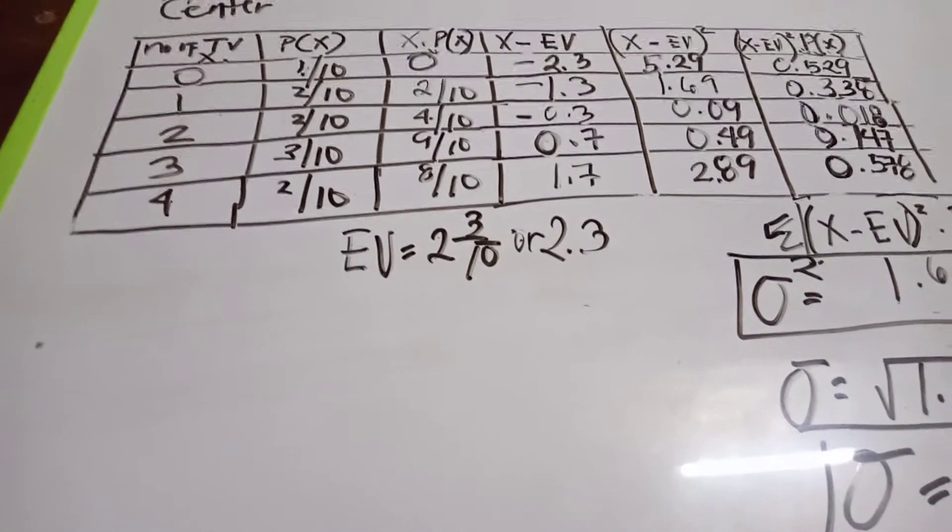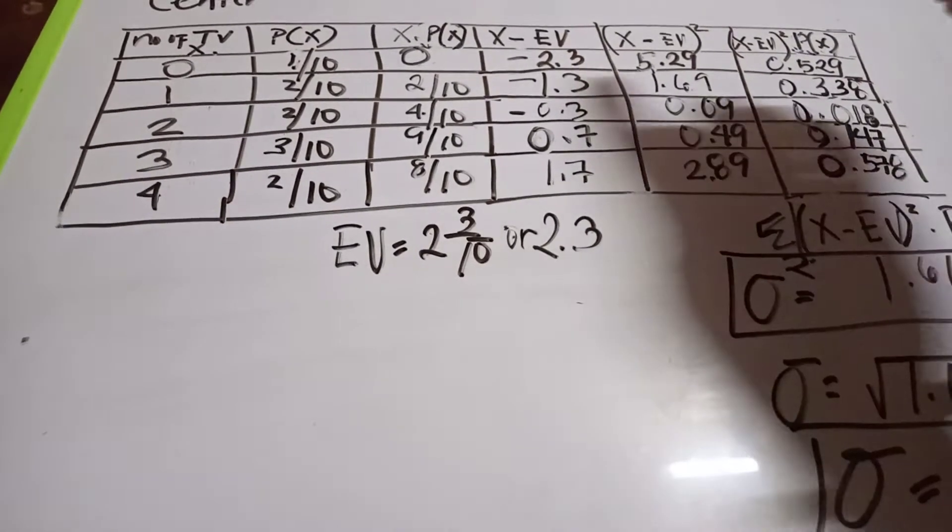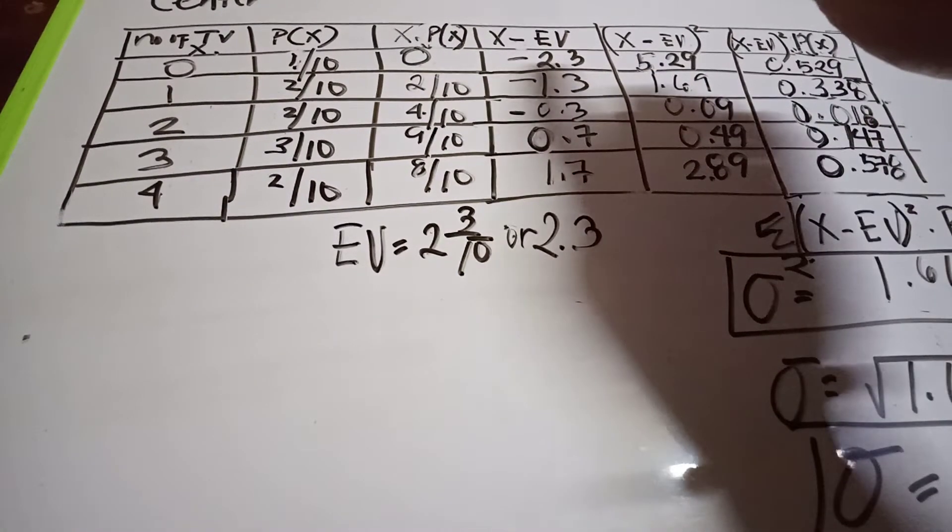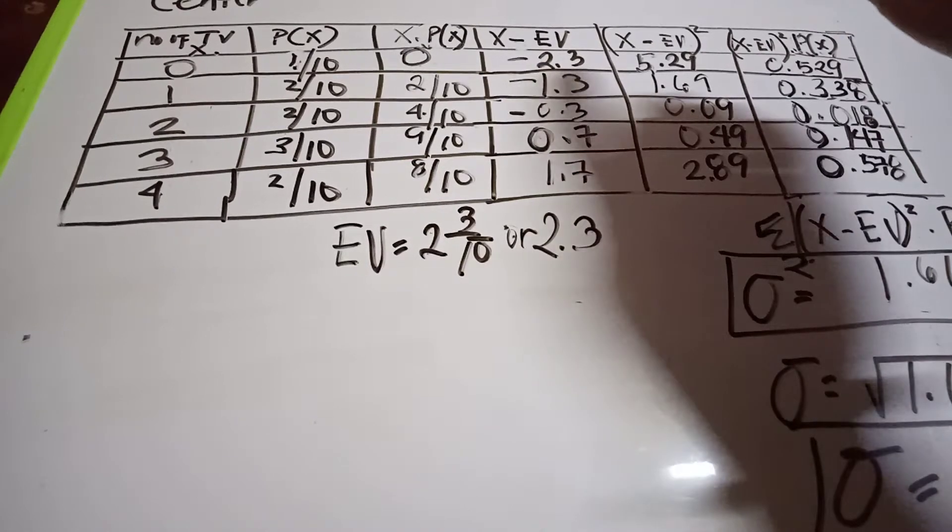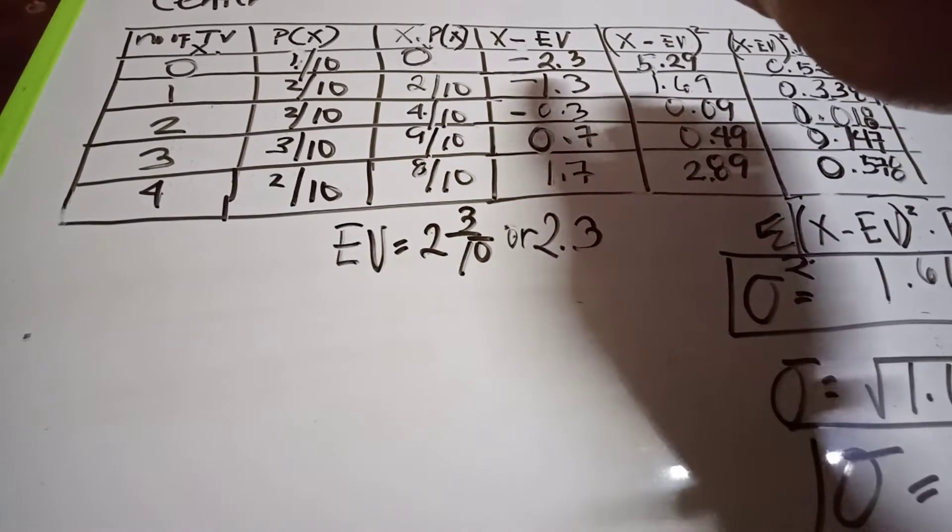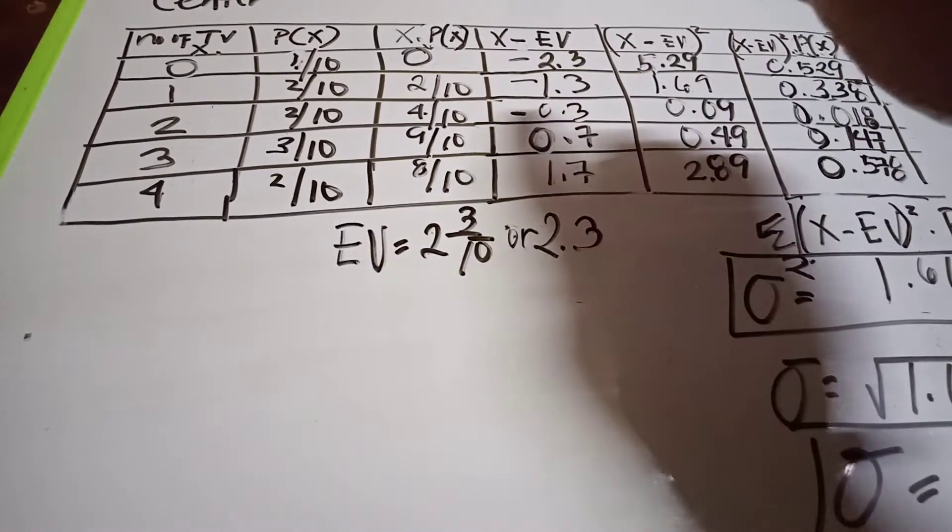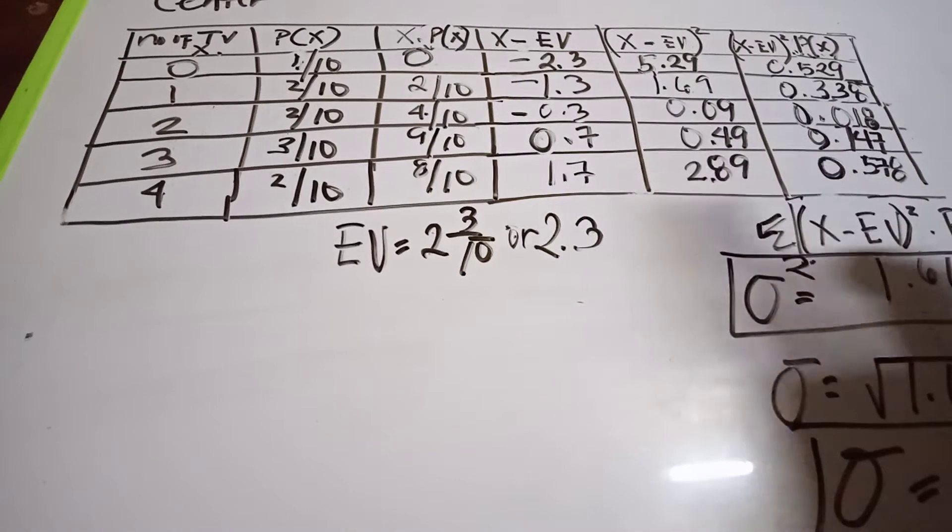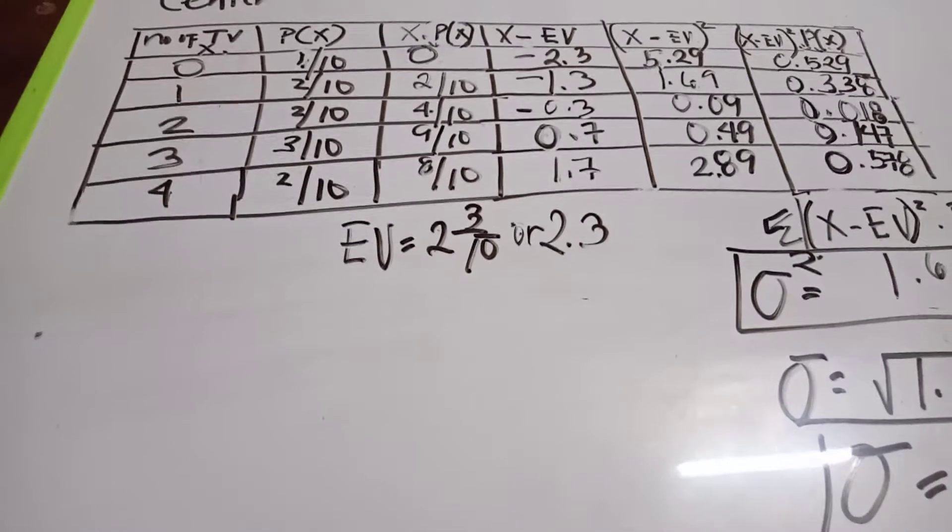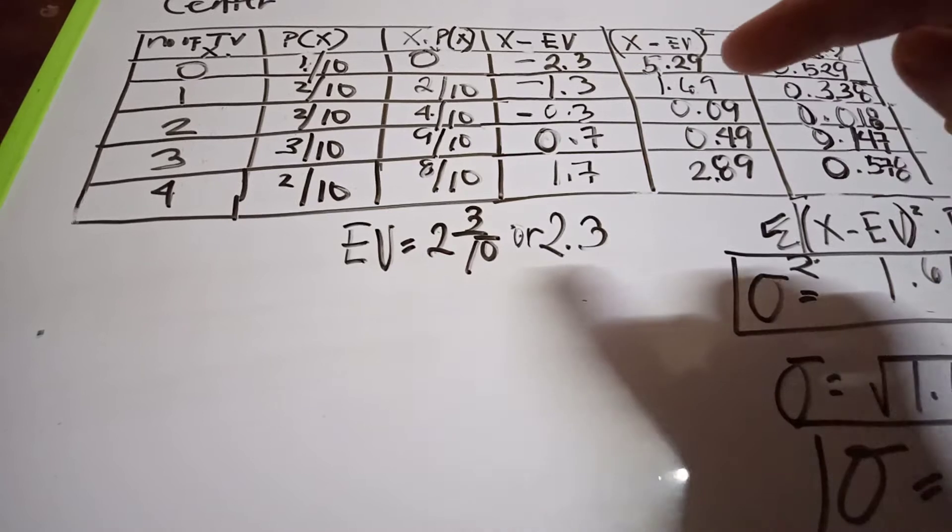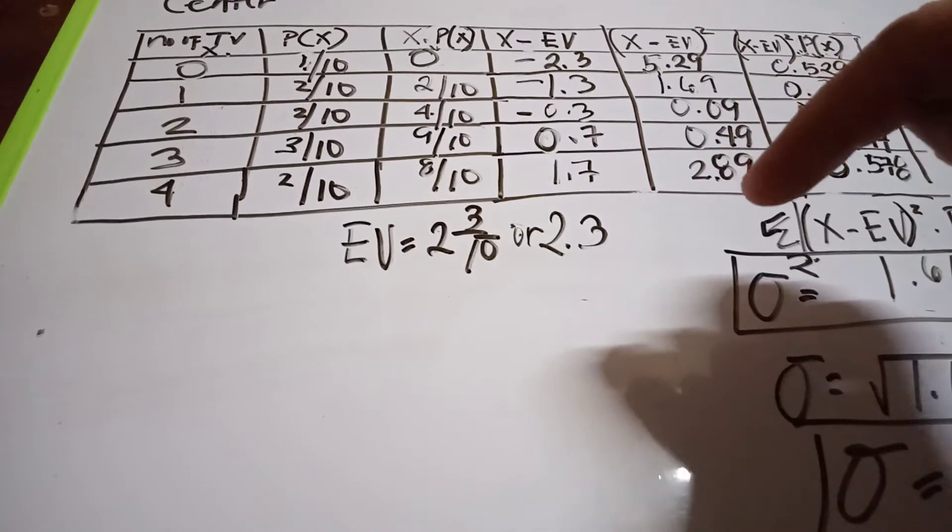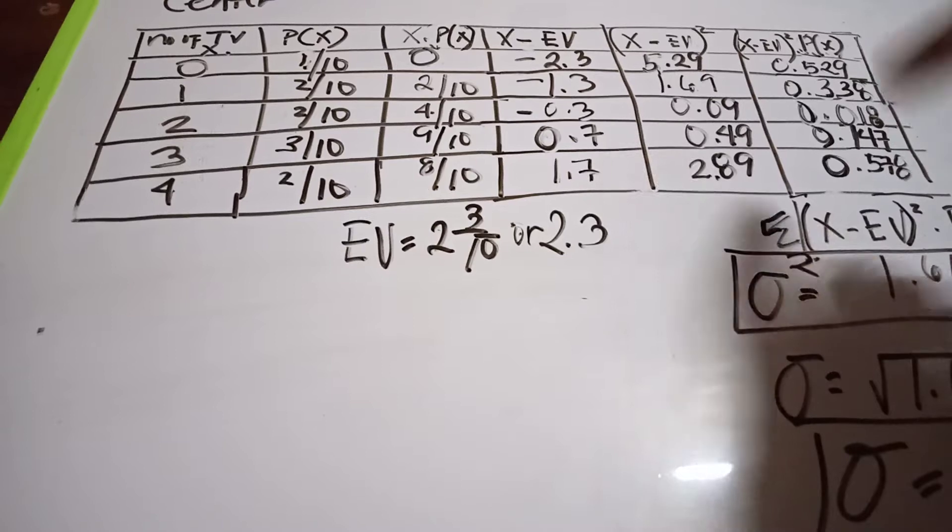Next, we compute x minus EV squared. Negative 2.3 times negative 2.3 equals 5.29. Negative 1.3 squared equals 1.69. Negative 0.3 squared equals 0.09. Remember, negative times negative becomes positive. 0.7 times 0.7 equals 0.49, and 1.7 times 1.7 equals 2.89.